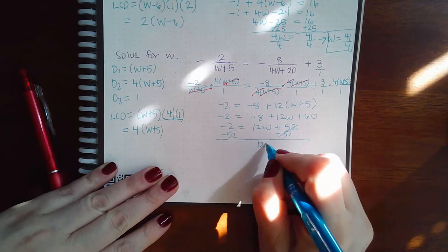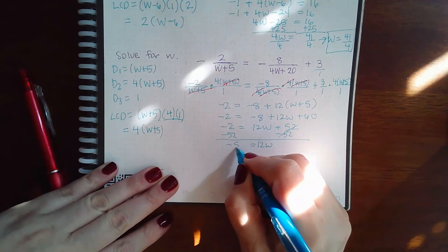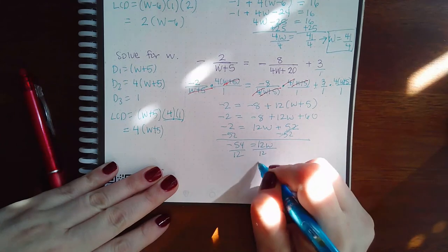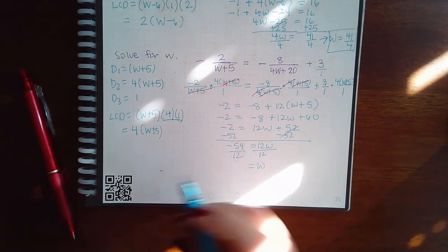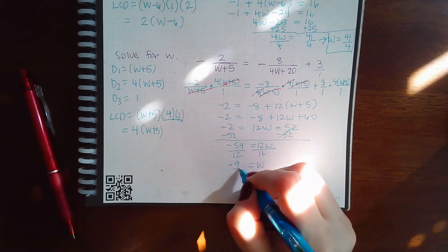And then I can go ahead and move over the 52. We get 12 W equals negative 54. Divide by 12. We get W equal to, let me simplify that fraction in my calculator. I get negative 9 halves.